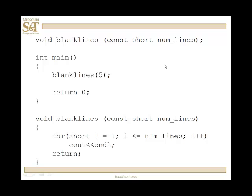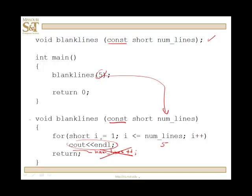One more example: blank lines. Here's the prototype — the parameter is a short, that's the number of blank lines you want. Using const is good. Back in main, I call blankLines passing it five. Five gets copied into num_lines, and there's a for loop that runs from one to five, outputting five end lines. I can use this anywhere in a calling function to output whatever number of blank lines I want to make my output look fine.